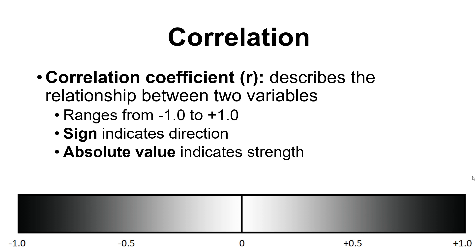We get two useful bits of information from R. The sign — whether positive or negative — indicates the direction or type of relationship between our two variables. A plus sign means a positive correlation, a negative sign means a negative correlation. The second thing we care about is the absolute value: how big is the number? The closer to 1 means a stronger relationship; the closer to 0 means a weaker relationship. The sign has nothing to do with the strength — it only tells us the direction.